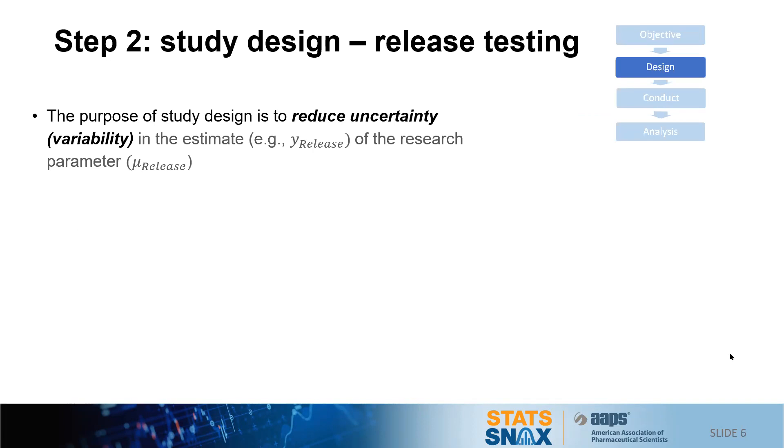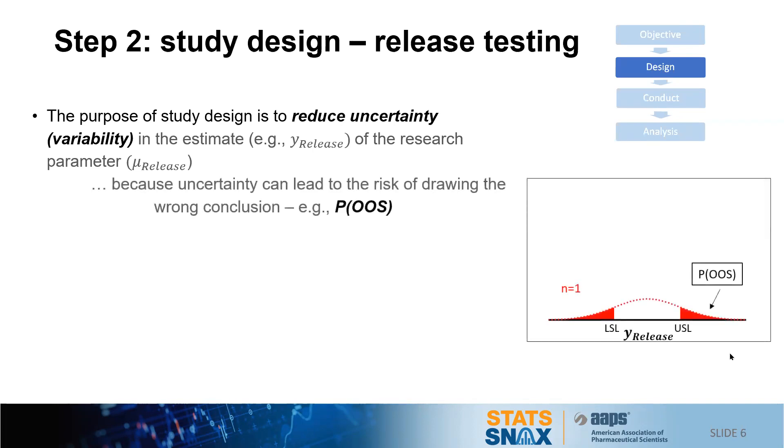So the purpose of study design is to reduce uncertainty or variability in an estimate that we make of a research parameter. Let's look at this from the standpoint of release testing, where the estimate I'm going to call y sub-release and the parameter we're studying is μ sub-release. Now because of uncertainty, we could risk, in this case, a probability of being at a specification. The figure I show, which is associated with doing one test of a sample, gives us a distribution which falls somewhat mainly in the specification range, but also has a relatively high probability of out-of-specification result represented by the areas outside of the specification range.